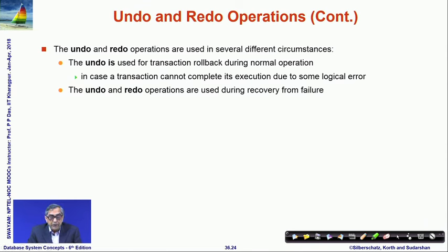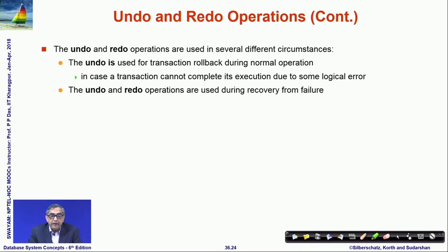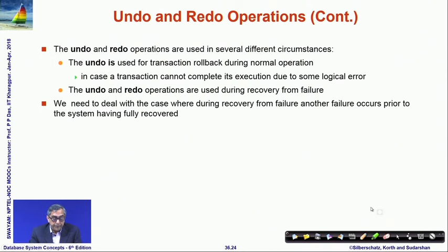Undo is used when a transaction rolls back during normal operation — for example due to a logical error or deadlock — in which case the whole effect of the transaction is undone by going backwards. When there has been a system failure, both undo and redo operations are required. We also need to handle the case where another failure happens during recovery, but that is more complex and will be discussed later.